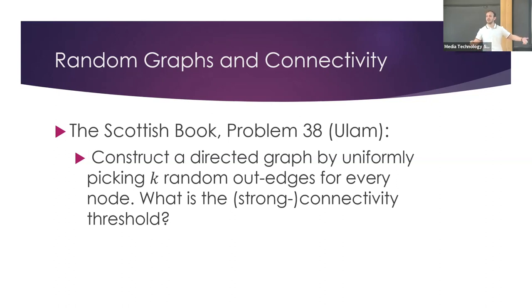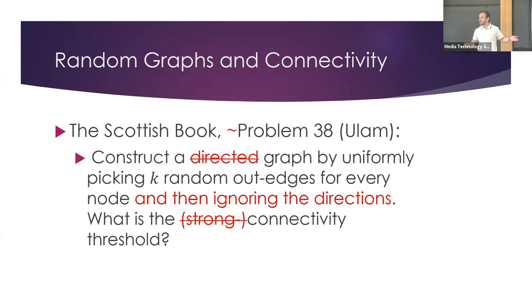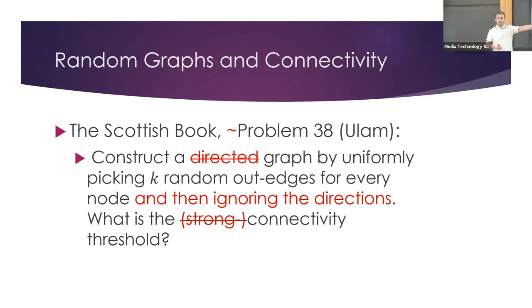By asking what is the probability, what we really care about is: what is the threshold — from which value of K does this tend to one? Ulam, as a good mathematician, didn't see the friendship relation as symmetric. But I don't want to talk too much about directed graphs, as this is both more complicated and wouldn't generalize to what I want to discuss next. So we're going to modify Ulam's problem a bit and make it undirected — we'll just remove the directions of the edges.